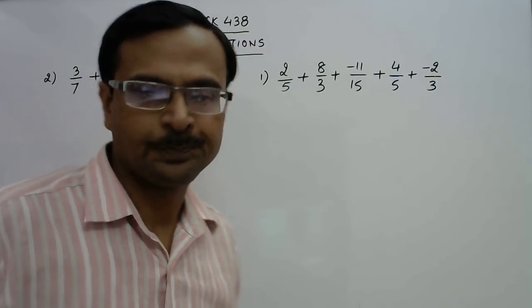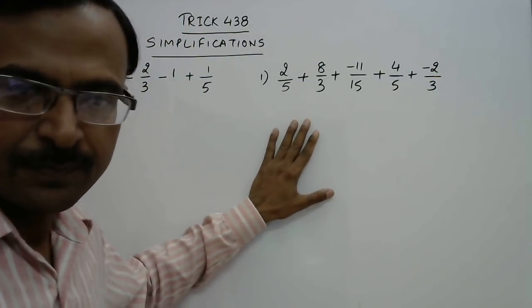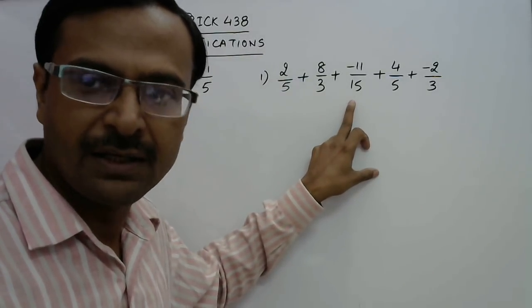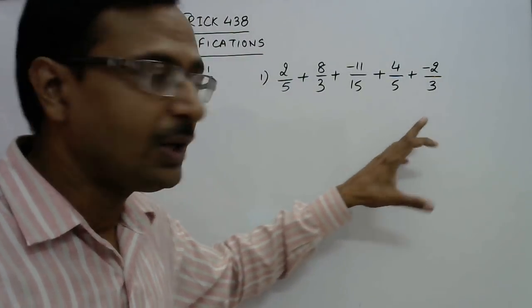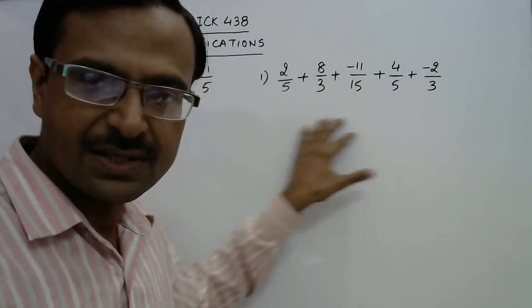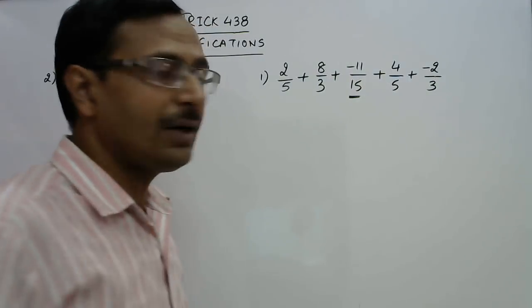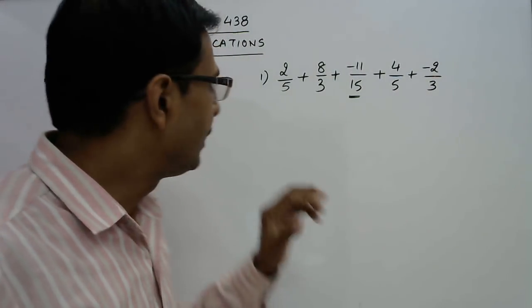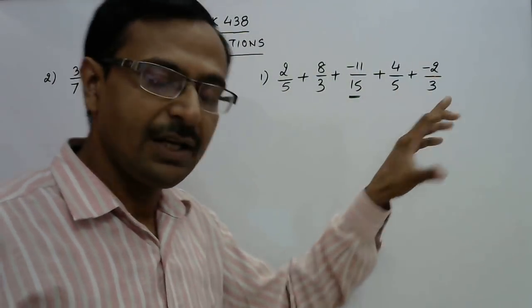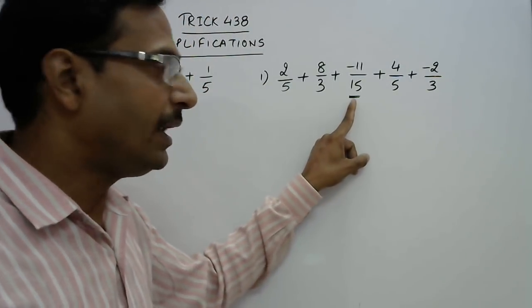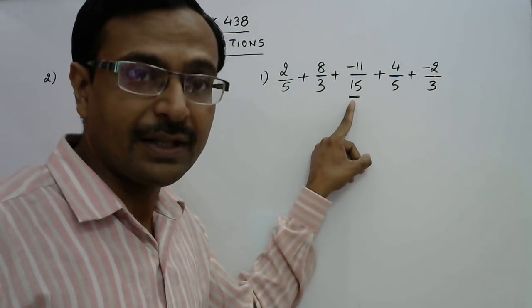Let's see how. In this first question the denominators are 5, 3, 15, 5 and 3. Now as you can see the largest denominator here is 15 and other denominators 5, 3, 5, 3 all are factors of that largest number in the denominator.